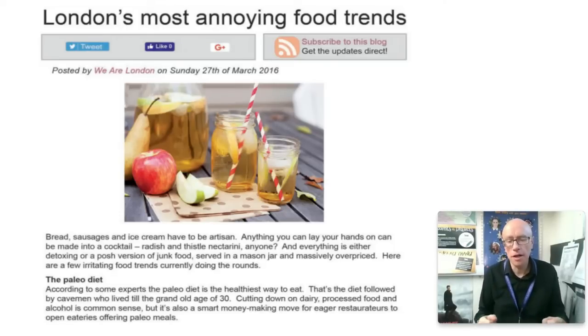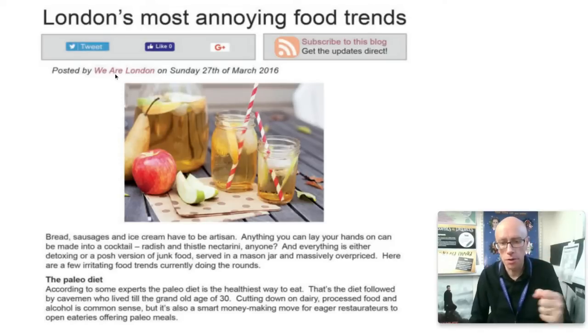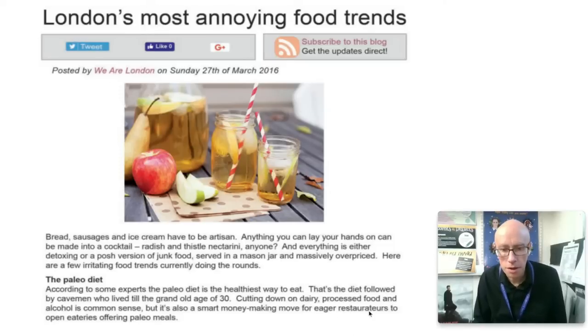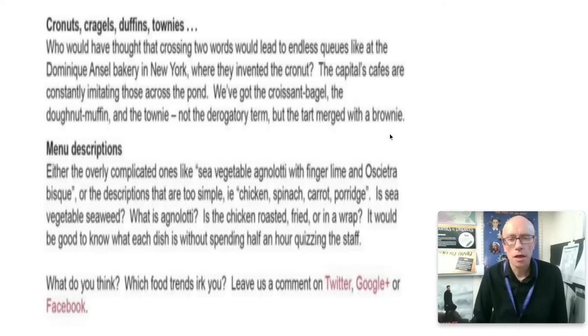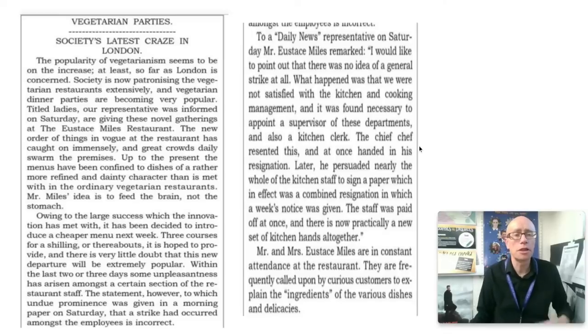Okay so it's very definitive - we've got sort of copular verbs being used all over the place here to give a very certain sense. 'We are London' - that's the copular verb. We've got 'it's also a smart money-making move' - that it's, there, the elided 'is', that's the copular verb as well. So a very strong sense of certainty.